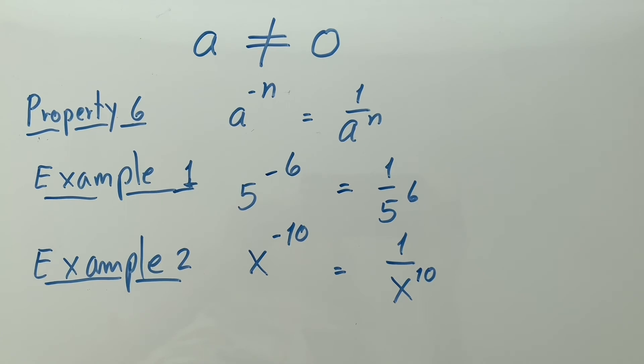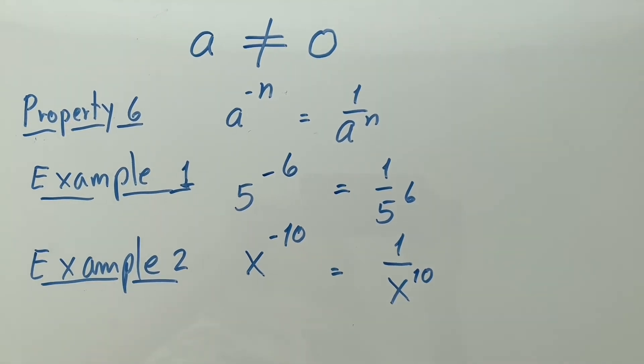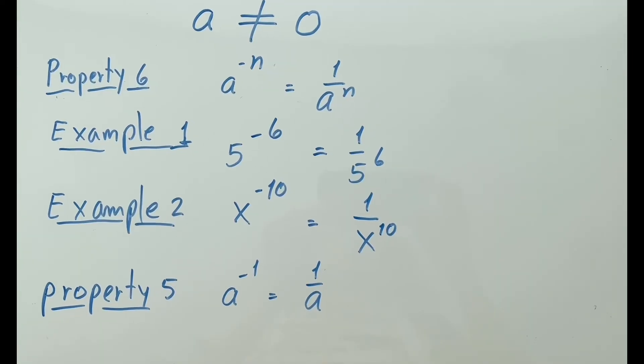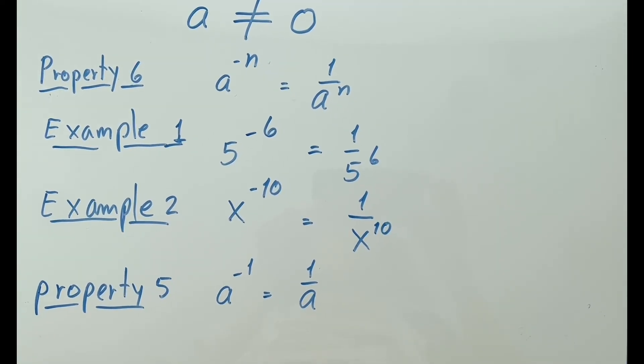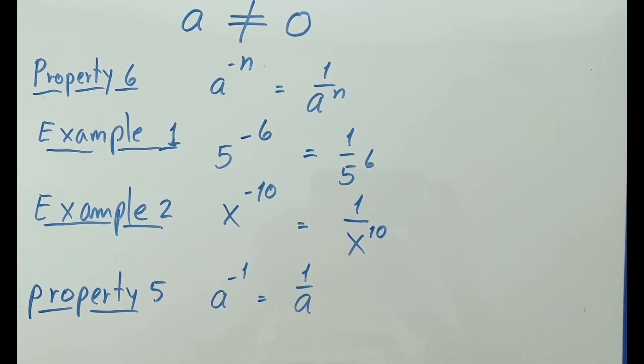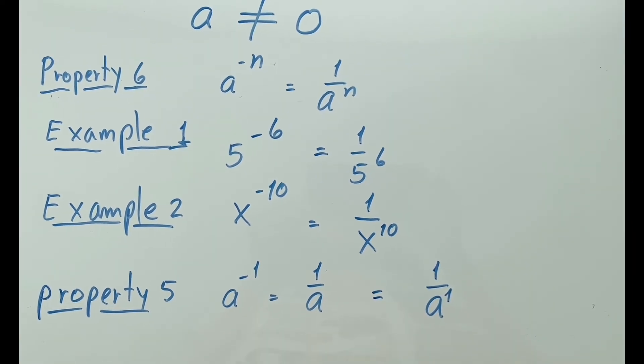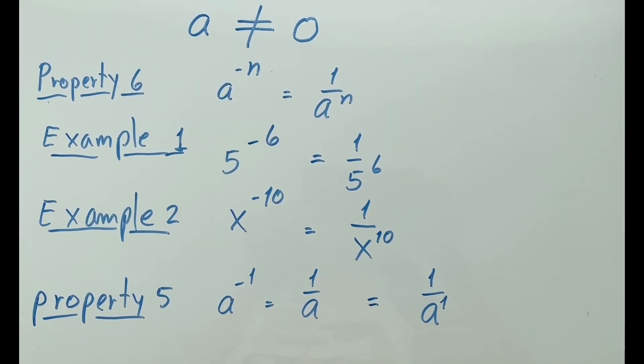If this property 6 seems unbelievable, let me go back to property 5. a to the minus 1 power is an invert a. And this a actually has a power of 1.